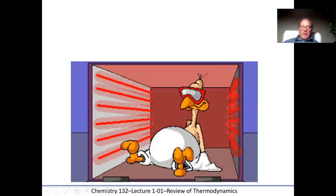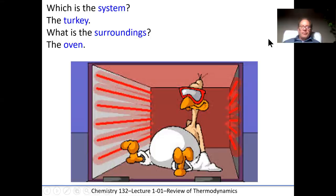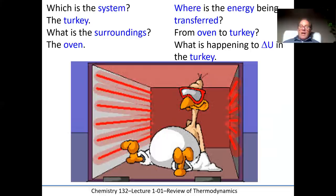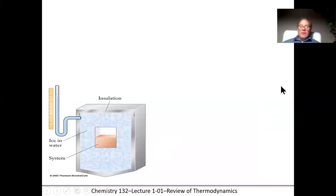Let's look at this system — a turkey inside an oven. The system is the actual turkey and the surroundings are the inside of the oven. The energy being transferred, converted from electricity or burning wood, is transferred into the turkey. So the energy is going from the oven to the turkey. What's happening to the internal energy, delta U, in the turkey? Heat is going into the turkey from the oven, so the energy must be going up — the molecules inside the turkey are increasing.